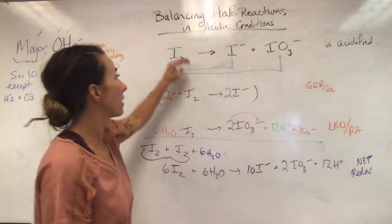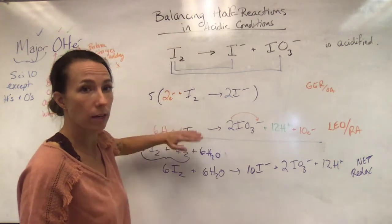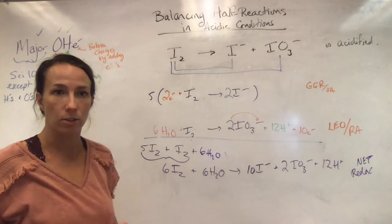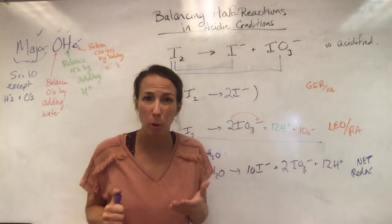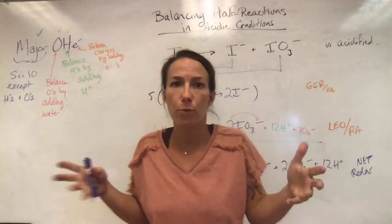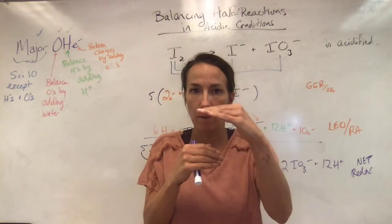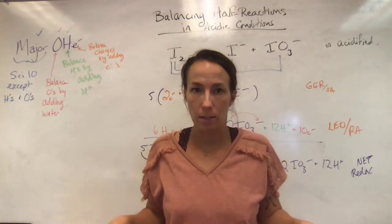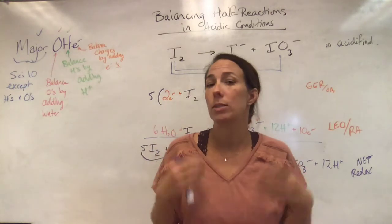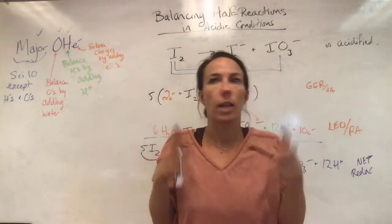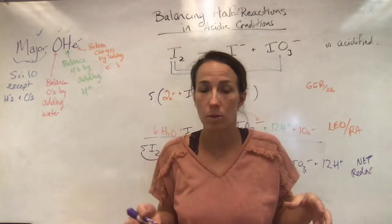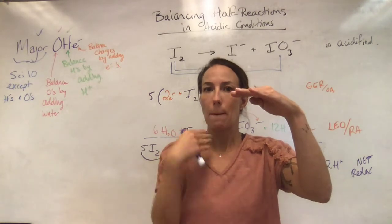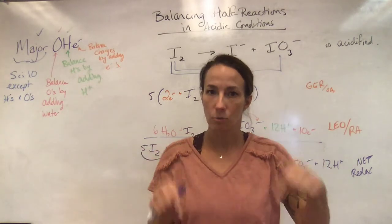For disproportionation reactions, just remember to split it into two half-reactions where the starting species is the same on both. That's Major OHE — trust the process. Split it up, do Major OHE on each half, balance your electrons, write your net. You can't go wrong; it's the same pattern every time. Have your two skeletons, Major OHE each one, balance your electrons, write your net.